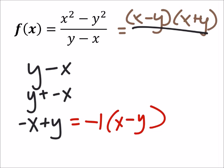So, what this means is that I've got a negative 1 times x minus y. Well, this shows us that the x minus y's cancel out, and then what are we left with?